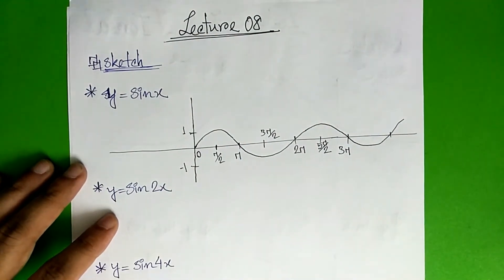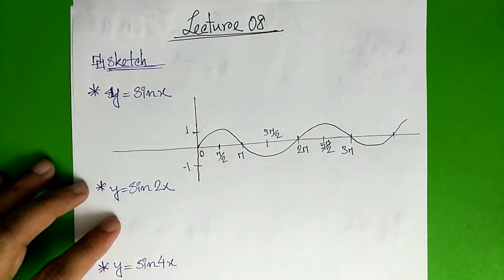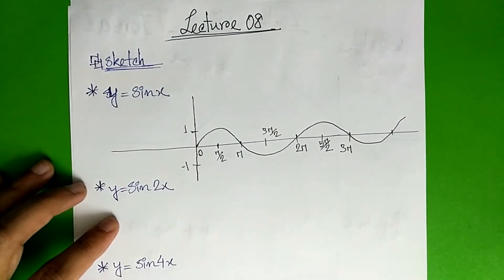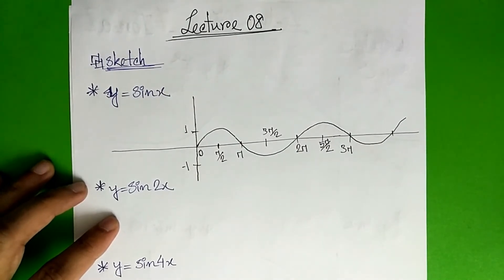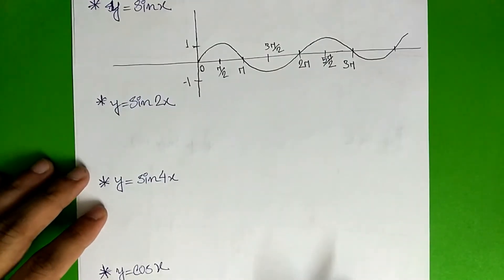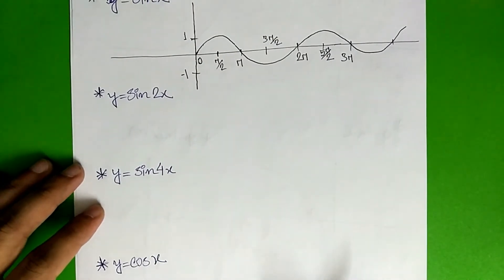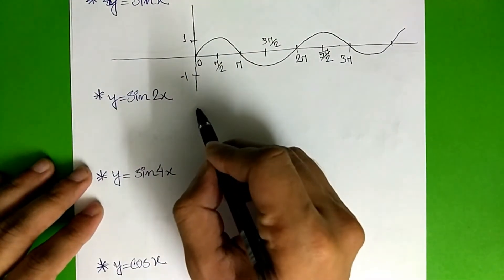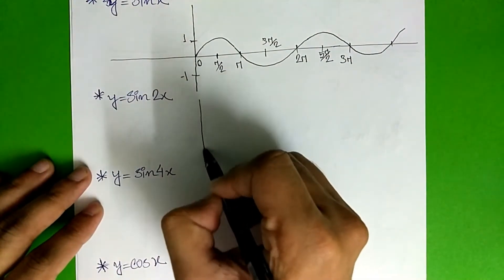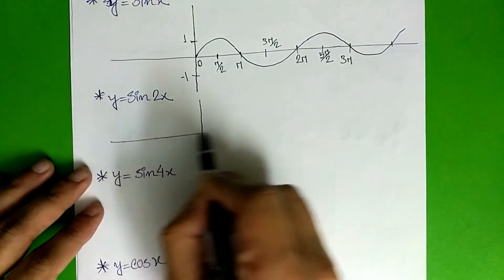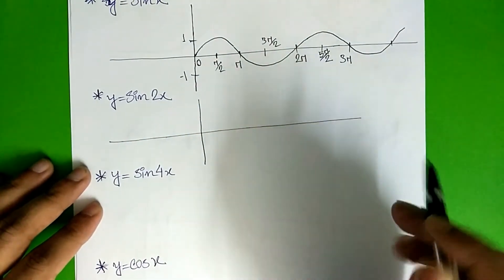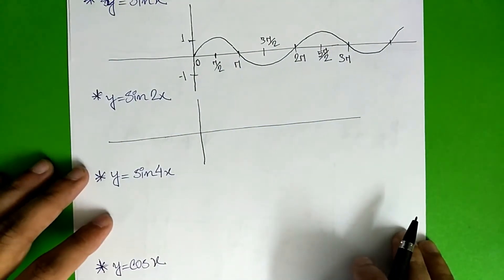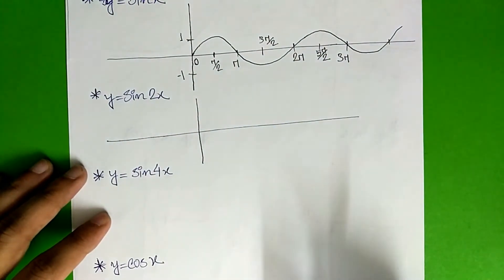So, let's start with the sin graph. Now, this is the general shape. Then, it is sin(2x). In this shape, it is just the shape of the frequency.